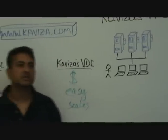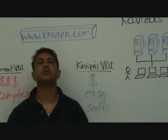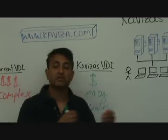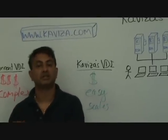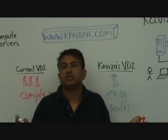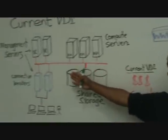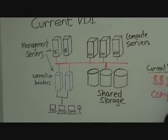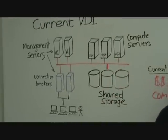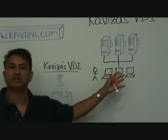With Kaviza's solution, a virtual desktop costs around $400 to $500 per desktop — less than the cost of a traditional PC. So you get the benefits of VDI without the cost and without the complexities. For about 100 desktops, the upfront cost is about $40,000 to $50,000 — significantly less than the $200,000 upfront cost of current VDI. And as you can see, Kaviza offers a very simple and easy-to-manage architecture.